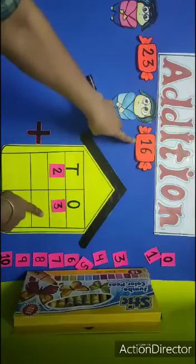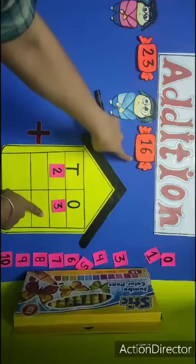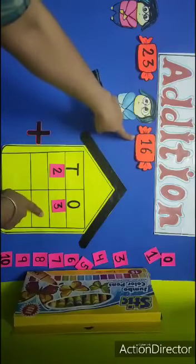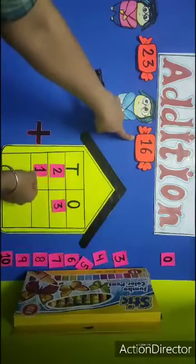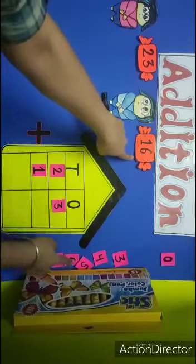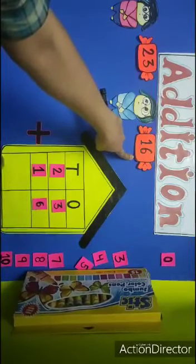Now, next number is 16. 1 tens, 6 ones. 1 will sit in tens room. 6 will go to ones room.